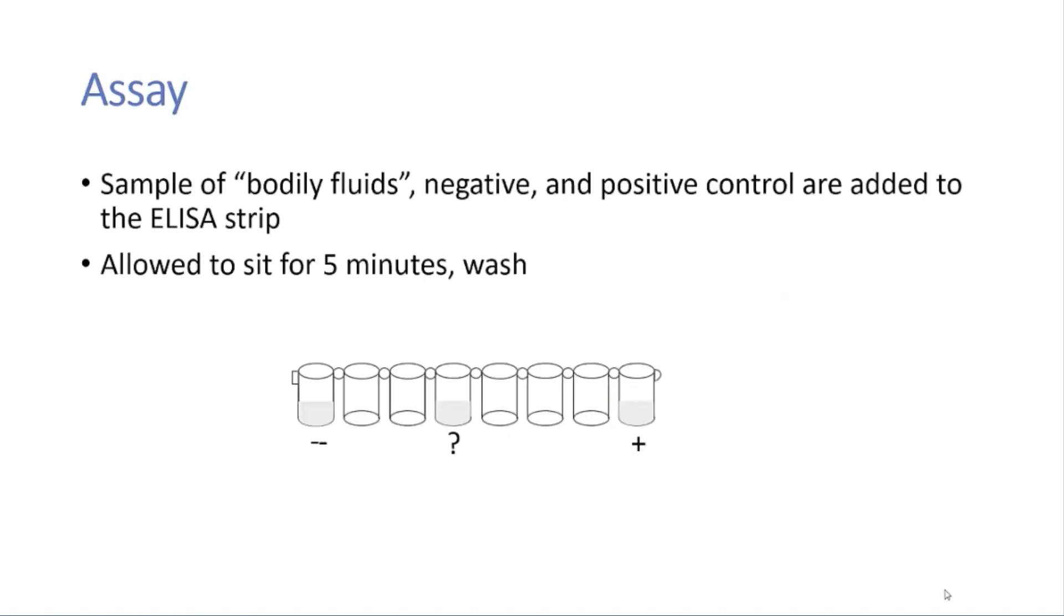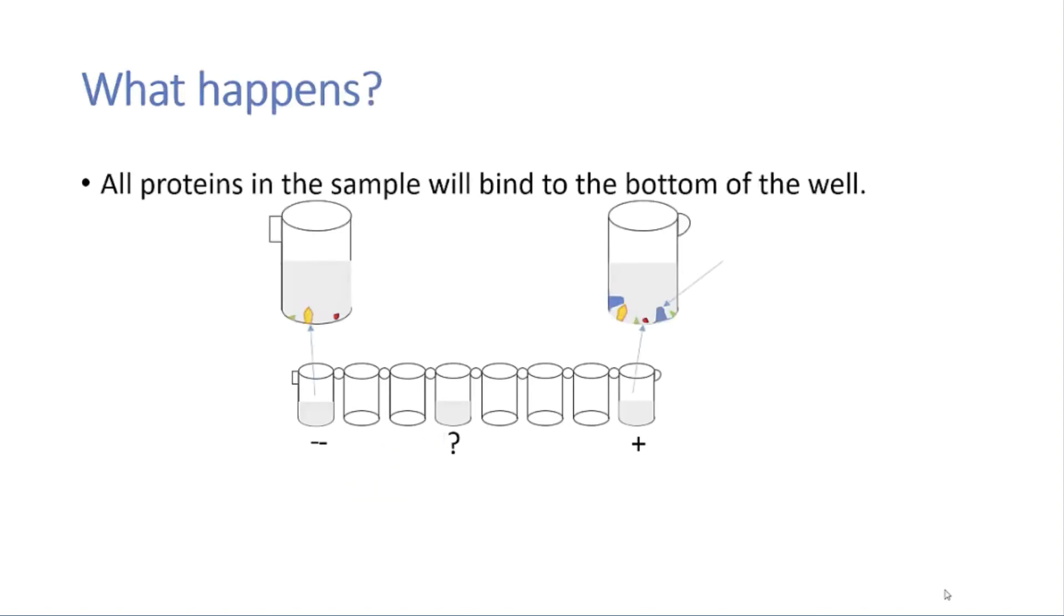In the assay we're going to be using, samples of bodily fluids and a negative and a positive control are added to an ELISA strip. The negative and the positive control are important to let us know whether the system is working in our hands. The negative control is a sample that we know for a fact does not have the antigen that we're interested in, while the positive control does have the antigen. The sample of bodily fluids, the negative and the positive control are added to the ELISA strip. It is allowed to sit for five minutes and then we wash away anything that was not bound.